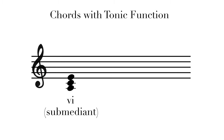The VI chord is called the submediant, because it is just as far below the tonic as the mediant chord is above. Much like the III chord, it is minor in a major key, but major in a minor key. It can also be referred to as the tonic parallel, as it can be substituted for the tonic chord, particularly in a deceptive cadence.